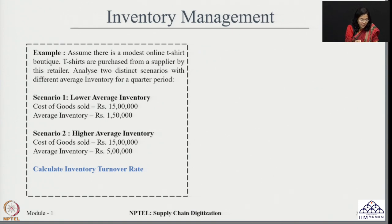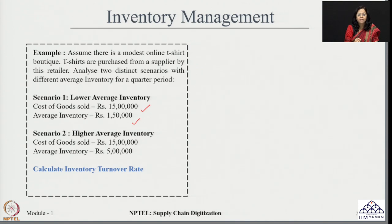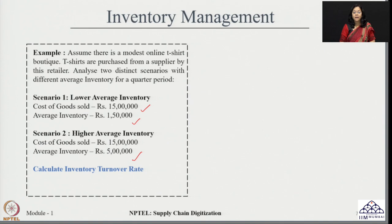In scenario 1 with lower average inventory, the cost of goods sold is given as 15 lakh rupees and the average inventory is around 1,50,000 rupees. In scenario 2 with higher average inventory, the cost of goods sold remains the same at 15 lakh rupees but the average inventory has increased to around 5 lakh rupees. Let us calculate the inventory turnover rate and analyze these scenarios to find the right strategy for the given quarter period, where all information is for a 3-month period.